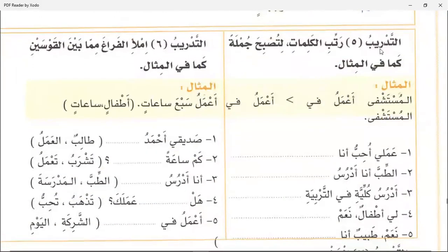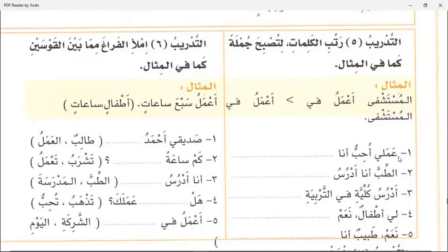Exercise five: Arrange the words so that they become a sentence. You have three words here — Mustashfa, Aamu, fi — you arrange them and they become: Aamu lo fi il mustashfa. Now you have three words: Amali, Uhibbu, Ana — you arrange them and it becomes: Ana uhibbu amali.